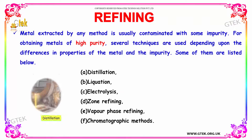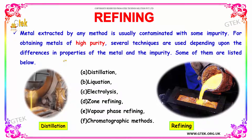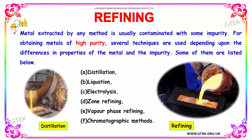The metal extracted by any method is usually contaminated with some impurities. For obtaining metals of high purity, several techniques are used depending upon the difference in properties of the metals and the impurity type. These methods include: distillation, liquation, electrolysis, zone refining, vapor phase refining, and chromatographic methods. These are the methods used to remove the impurities.